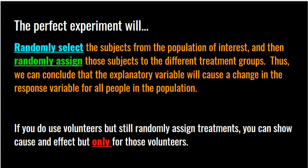There are actually two aspects of randomness here. The subjects involved in the experiment were randomly selected from the population, and who gets what within the experiment is randomly assigned. If this is true, we can officially say that the explanatory variable will cause a change in the response variable for all people in the population.